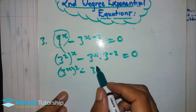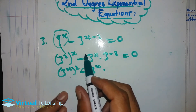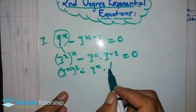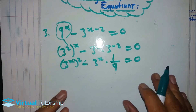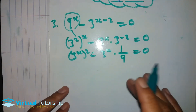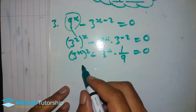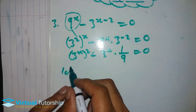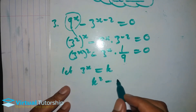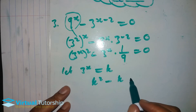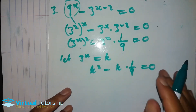So you rewrite it: change 9 to 3 exponent 2, then raise to exponent x, minus 3 exponent x multiplied by 3 exponent minus 2, is equal to zero. So you rewrite as squared — as discussed. So (3 exponent x) squared, and this one becomes a positive exponent: 1 over 9, equal to zero.